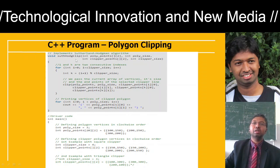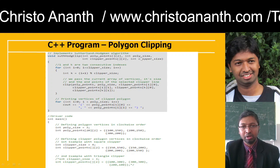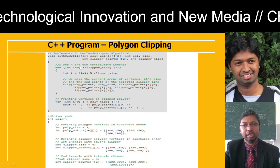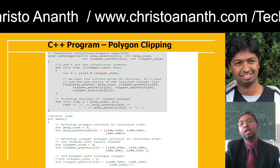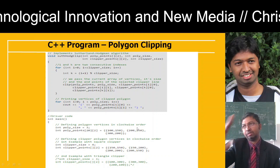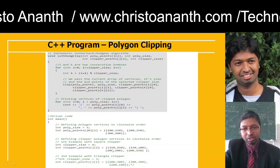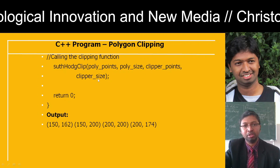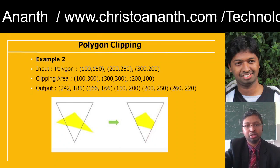The sutherland_hodgman_clip function is predefined and available in C++. It takes polygon points, poly_size, clipper points, and clipper_size. In a loop, k = (i+1) % clipper_size, and we pass the clip edge values. The driver code sets poly_size=3, polygon points as (20,100) and (150,...), and clipper_size=4, then calls sutherland_hodgman_clip to return the exact clipped output vertices.